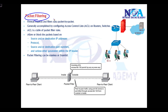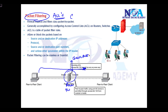Packet filtering is essentially ACLs — if you remember from basic CCNA routing and switching. It's a method where traffic moves through the device, whether a router or a firewall, and the device filters packets by checking the source, destination, protocol like TCP or UDP, and source or destination port numbers such as port 80, 23, or 21, as the traffic passes through the networking device.